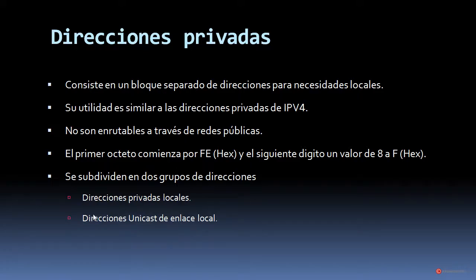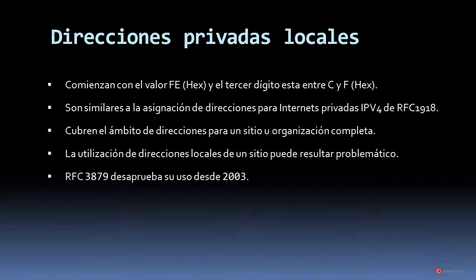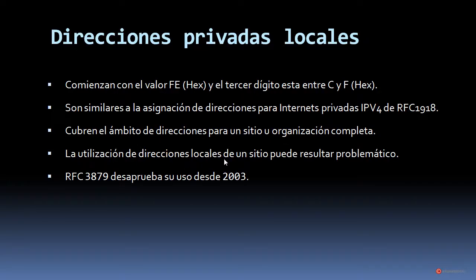Se subdividen en dos grupos: las direcciones privadas locales y las direcciones únicas de enlace local. Las direcciones privadas locales comienzan con el valor FE en hexadecimal y el tercer dígito está entre C y F. Son similares a la asignación de direcciones privadas IPv4 del RFC 1918 y cubren el ámbito de un sitio u organización completa. Sin embargo, la utilización de estas direcciones puede resultar problemática, y por ello el RFC 3879 desaprueba su uso desde 2003.